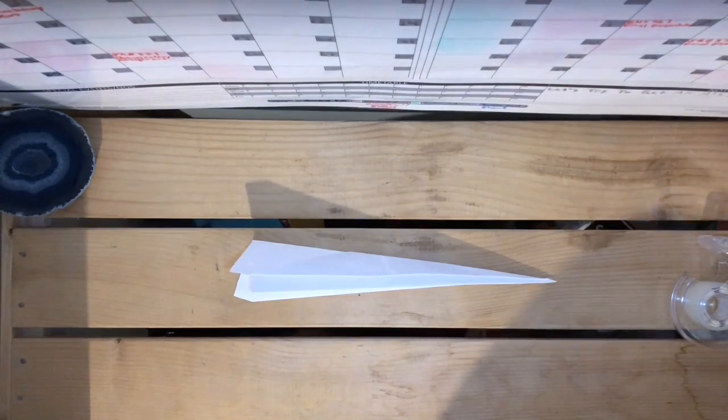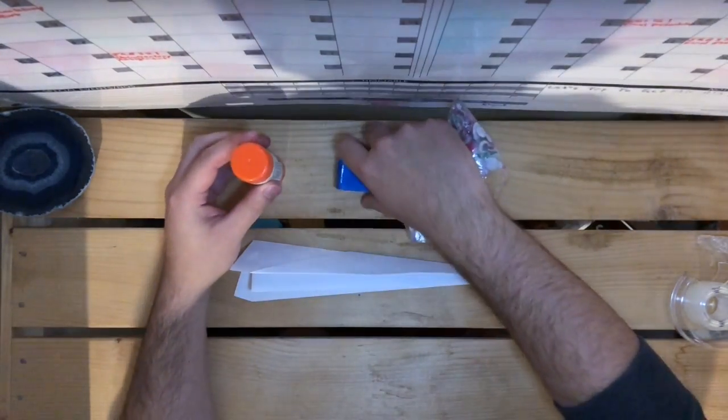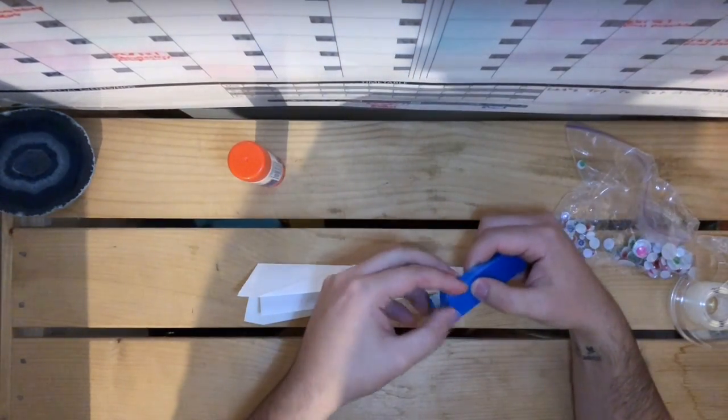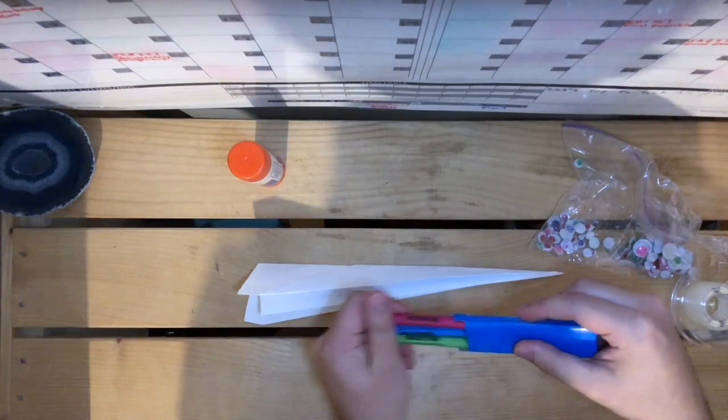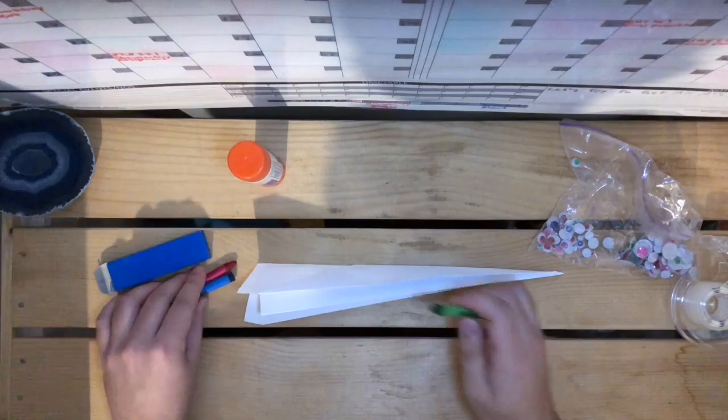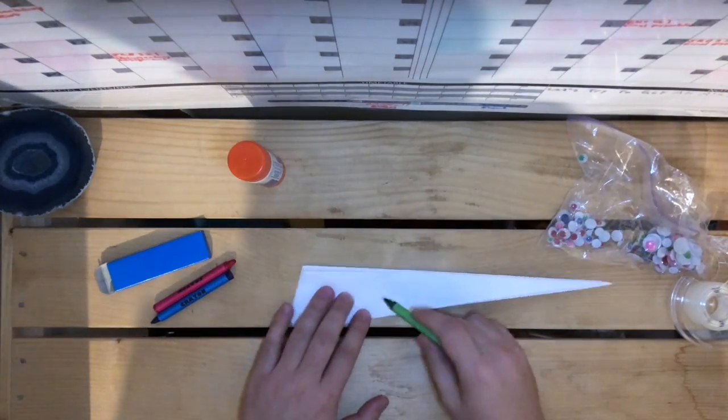I got a couple simple materials here. You can definitely have some crayons and color maybe the wings of your planes or even the base or even the whole airplane if you want. Feel free to color it.